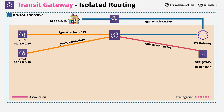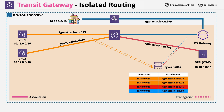For example, VPC1 using 10.16.0.0/16 could be configured to propagate that CIDR range to the route table it's associated with or to other route tables. Propagation controls which route tables learn about routes from which attachments. The default is a single route table which all attachments use and all attachments propagate into. But what if you want to isolate networks? For example, what if you wanted VPC1 and VPC2 to be able to access on-premises networks but not each other — you want VPC1 to communicate with the 10.18 and 10.19 networks, but not with VPC2?